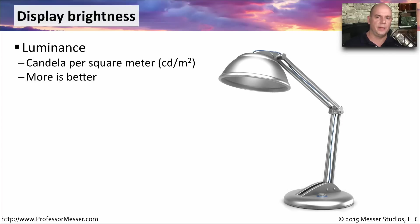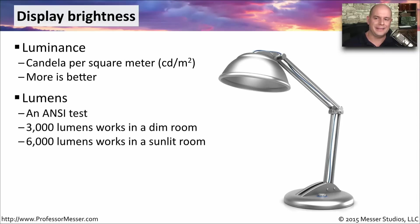The brightness of a display is an important characteristic. We refer to this as the luminance of the display, and it's usually measured as candela per square meter, abbreviated as cd/m². In most cases, a brighter monitor is going to be a better-looking monitor. Another measurement of brightness is lumens, which is an ANSI standard test. 3,000 lumens would mean the monitor looks very good in a dim room, while 6,000 lumens means it will work well even in a sunlit room.